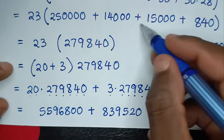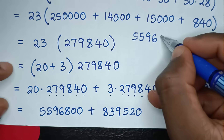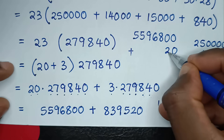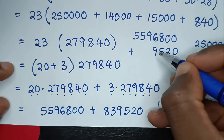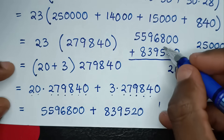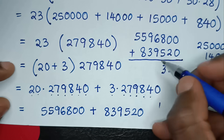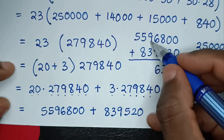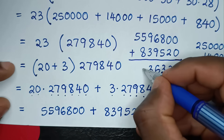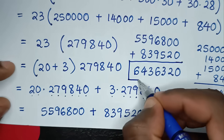So here let's add: 5,596,800 plus 839,520. Adding: 0 plus 0 is 0; 0 plus 2 is 2; 8 plus 5 is 13, write 3 carry 1; 6 plus 9 is 15 plus 1 is 16 carry 1; 9 plus 3 is 12 plus 1 is 13 carry 1; 5 plus 8 is 13 plus 1 is 14 carry 1; plus here it will be 6. So this is our final answer: 6,436,320.